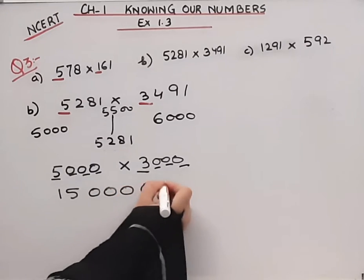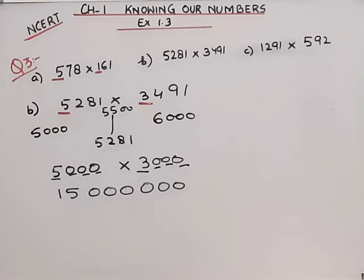Now here we have 3491. That's 30 million. Okay, let's move on to the C part.